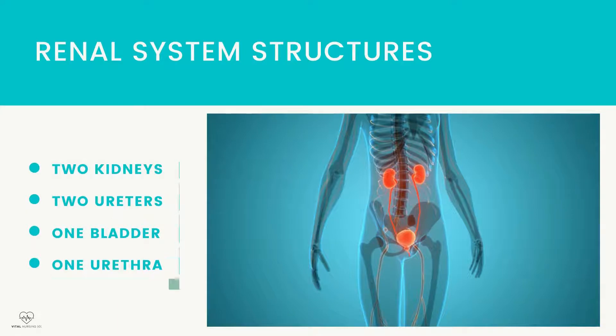Renal system structures. The renal system consists of two kidneys, two ureters, one bladder, and one urethra. The kidneys excrete waste products that the nephron removes from the blood, along with other fluids, to produce formed urine.